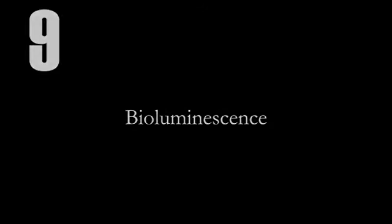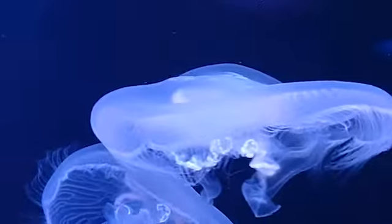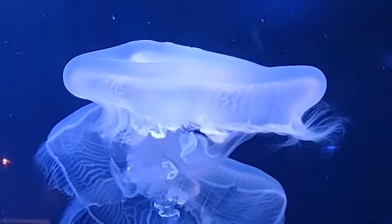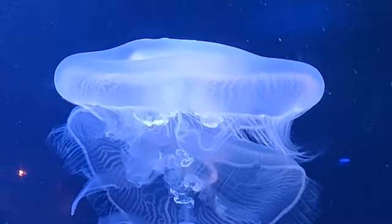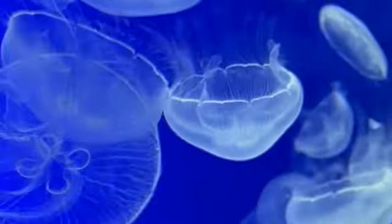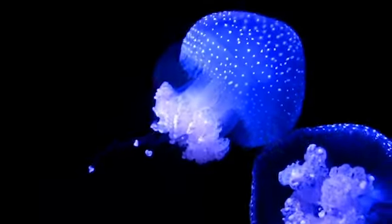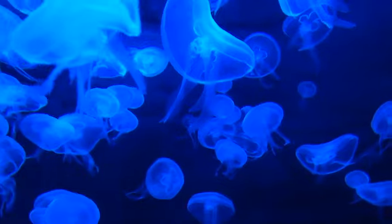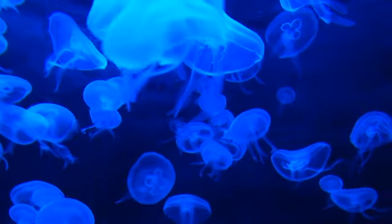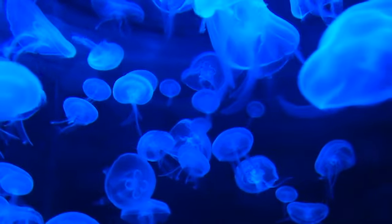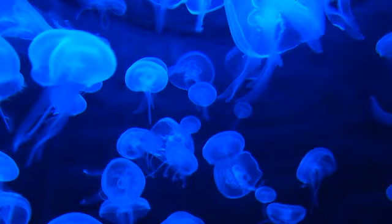Bioluminescence is the production and emission of light by living organisms. It can be found in various marine species, such as certain types of plankton, jellyfish, and some fish. When disturbed, these organisms emit a stunning blue or green glow, creating ethereal scenes in the ocean at night.